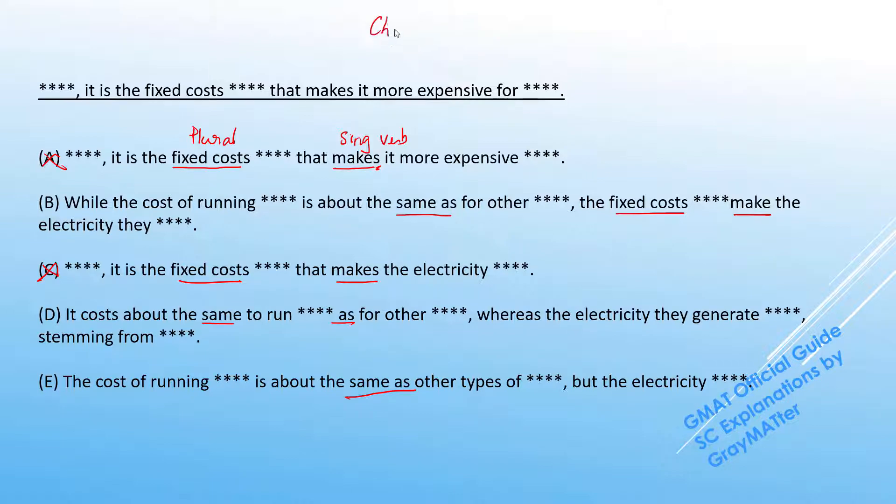So for example, if I say China's population is greater than India, this would be a big mistake because I am comparing the population to a country itself. So this would be perfectly conveyed if I said China's population is greater than India's population. Because now we know what is clearly being compared. And another interesting thing about the concept of comparisons is that when you're comparing entities, they generally follow the rules of parallelism as well.